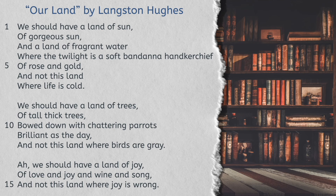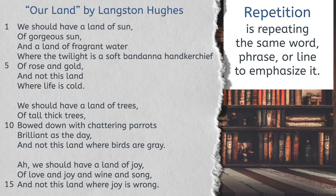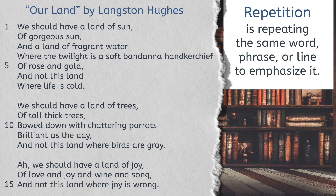The poet chooses the form of their poem. They might change the word order to give meaning or add an effect. They might stop mid-sentence and go to the next line, or they might use repetition — repeating the same word, phrase, or line to emphasize it. Hughes repeats 'and not this land' in his poem to emphasize that this land is not what he desires.